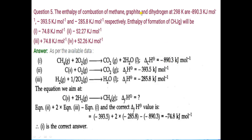Second is combustion of graphite — graphite means carbon in solid state. Carbon in solid state reacts with oxygen to form carbon dioxide, and the enthalpy of combustion is minus 393.5 kJ/mol. Combustion of dihydrogen: H₂ plus O₂ gives H₂O. Remember, we have to form one mole of H₂O, so balance the equation and write the enthalpy of combustion accordingly.